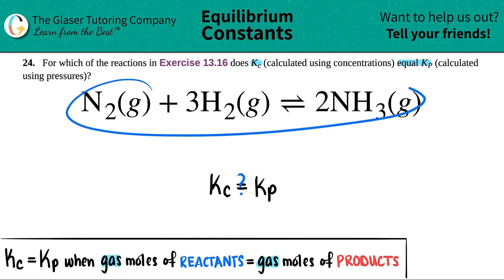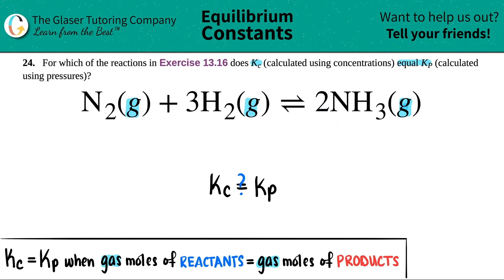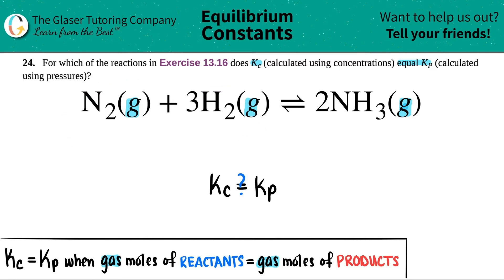First, just make sure we're talking about the correct states. Here I have a gas, here I have a gas, and here is a gas as well. So I'm going to be taking all three of these into account. We just have to find out the total number of gas molecules on the reactant side and the total number of gas molecules on the product side, and see if they equal each other.